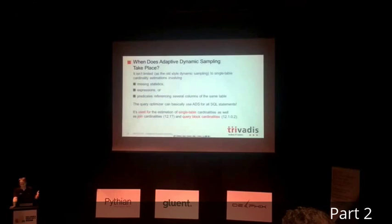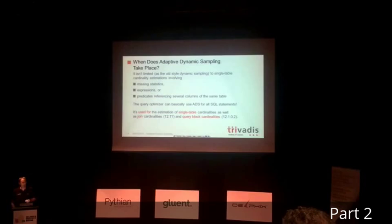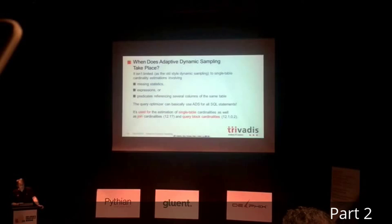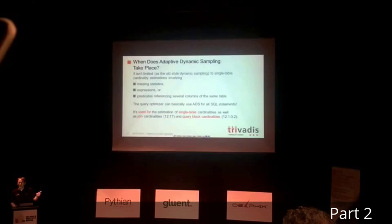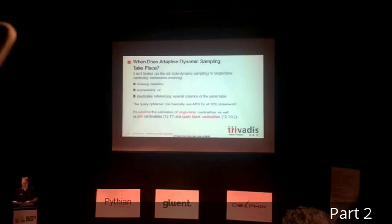The old implementation was used by the optimizer just to provide more information for single-table estimation — when the optimizer was estimating how many rows are returned by scanning a table. The new implementation is also used for joins, so you can execute sampling queries that return information useful for improving the estimation of a join. It's also used for query block cardinalities, for things like GROUP BY for example. Note that the query block part, according to our tests, is only in 12.1.0.2. For join cardinality, we see sampling queries in 11.2.0.4 but the result of those queries is never used — it seems those pieces are only completely implemented starting from 12.1.